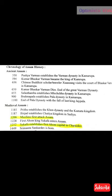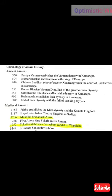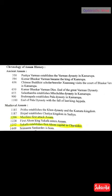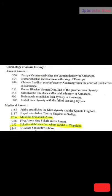In 350 AD, Pushyavarman establishes the Varman dynasty in Kamarupa. In 594, Kumarvarman Bhaskarvarman becomes the king of Kamrup. In 636, Chinese Buddhist scholar and traveler Xuanzang visits the court of Bhaskarvarman in Kamrup. In 650, Kumarvarman Bhaskarvarman died — end of the great Varman dynasty. In 655, Salasthamba establishes the Mlechchha dynasty in Kamrup. Around 900, Burma Pala establishes the Pala dynasty in Kamrup. In 1100, the Pala dynasty ends with the fall of the last king Jayapala.